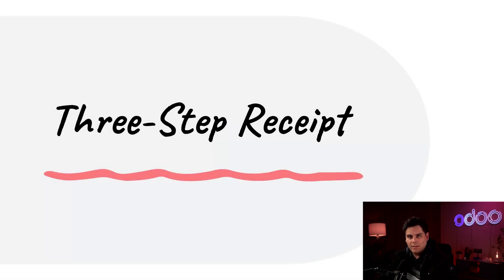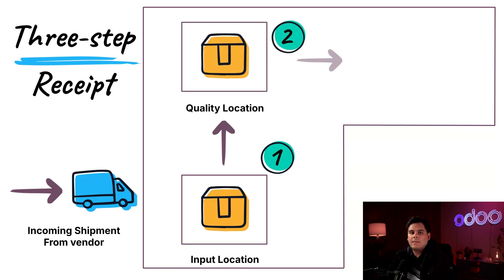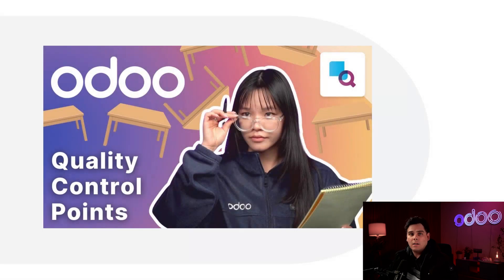A three-step receipt is a great solution when every incoming product needs a quality check — received items go to an input, then a quality control area, then stock. But does that mean we have to use three-step receipts to do quality checks? No. More steps mean more validations, which can slow things down. Instead, you can use quality control points to trigger checks at any transfer step, whether it's one, two, or three steps.